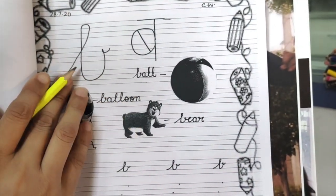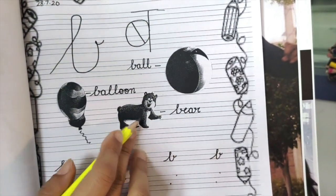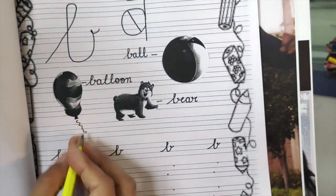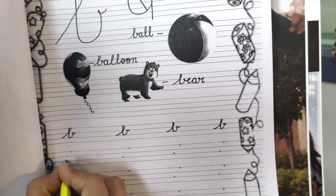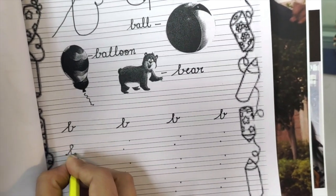Let's write the new letter B. B for ball, B for bear, B for balloon. As we write the new letter B, you can take it like this and touch the line.